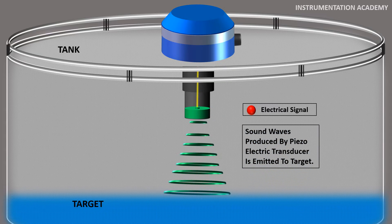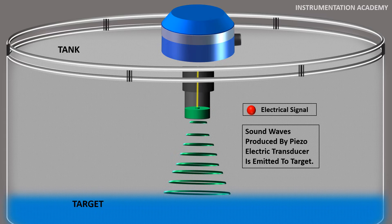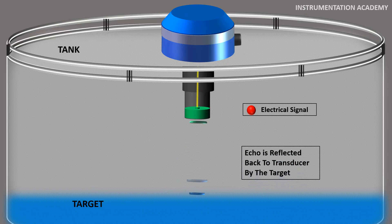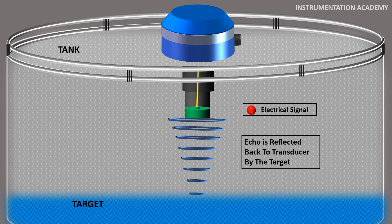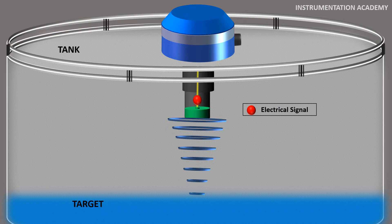The sound waves travel through the air and when it touches the target, the sound waves get reflected back to the transducer as echoes. Now the transducer acts as a receiving device and converts echo sound signal back into an electrical signal.